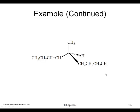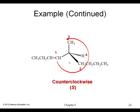Here's another example with a carbon double bond, which carries extra priority. With priorities assigned one, two, and three, and four in the back, we get a counterclockwise direction, giving us the S enantiomer.